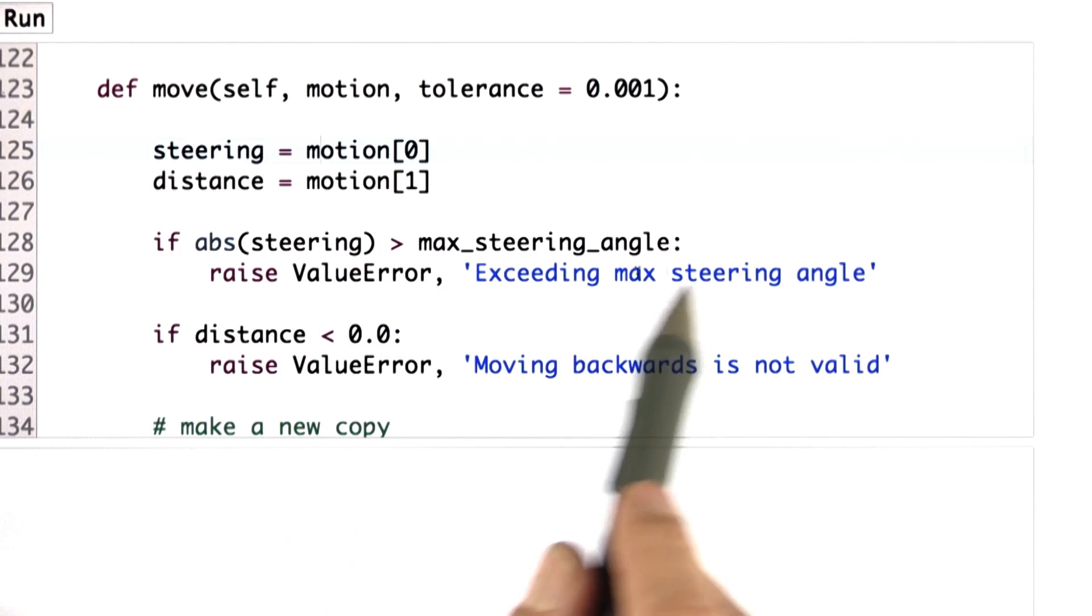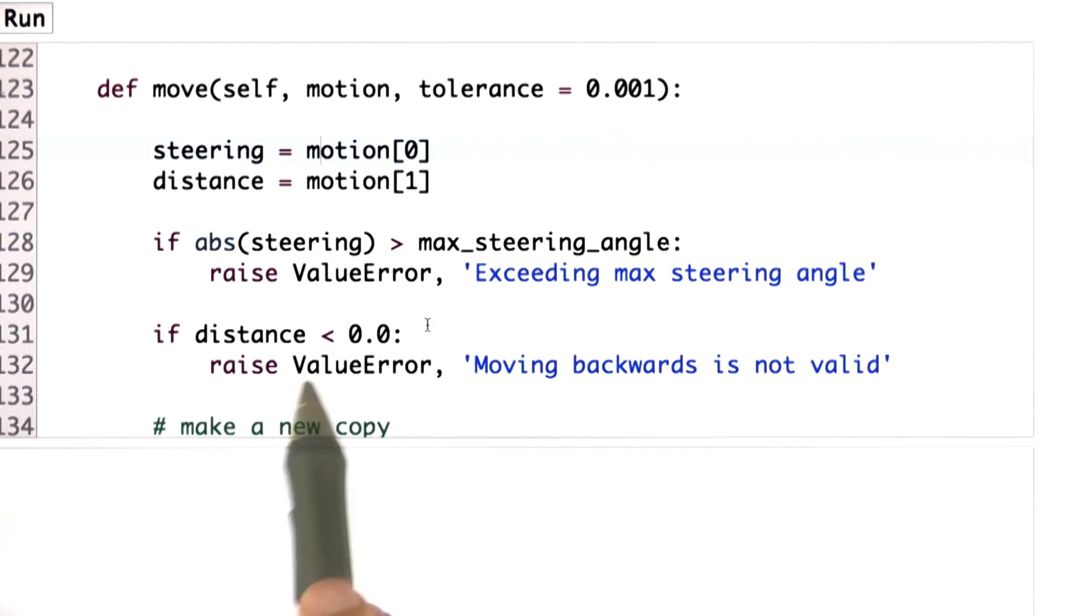I have a few error checks here to make sure that the steering angle doesn't exceed the max steering angle. The same is true for distance—I want it to be non-negative.